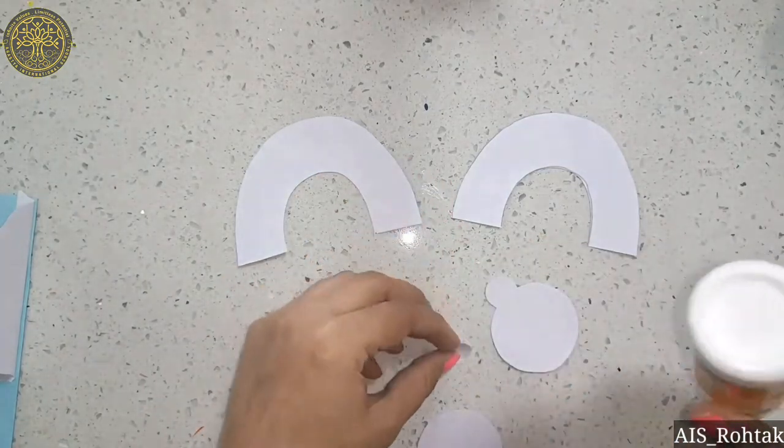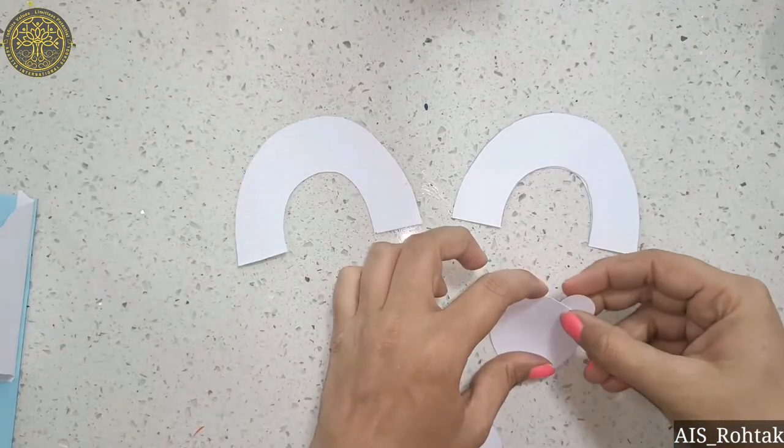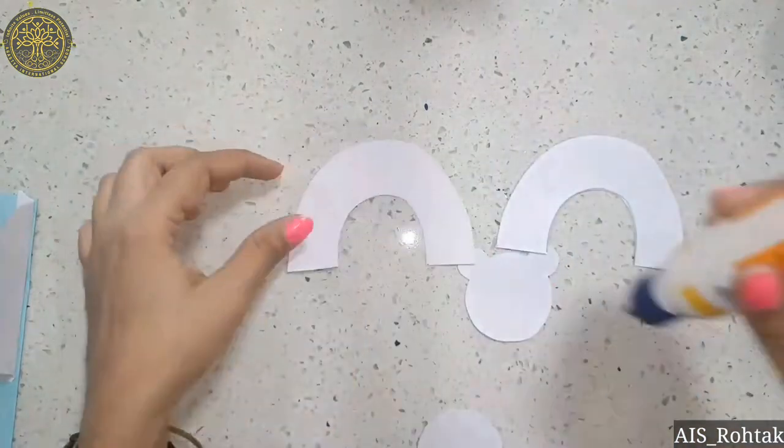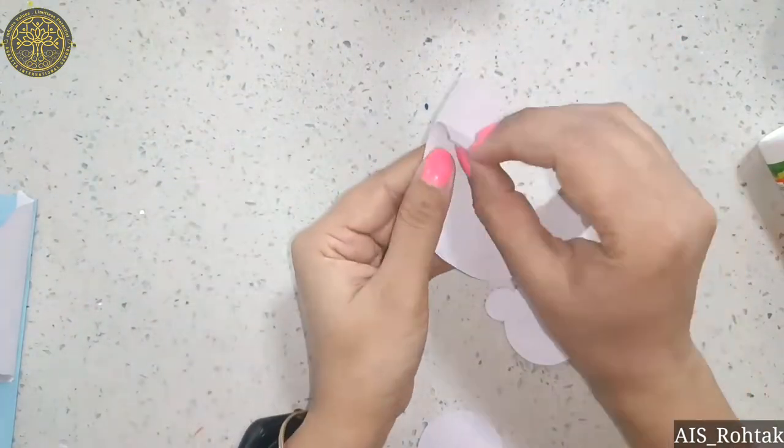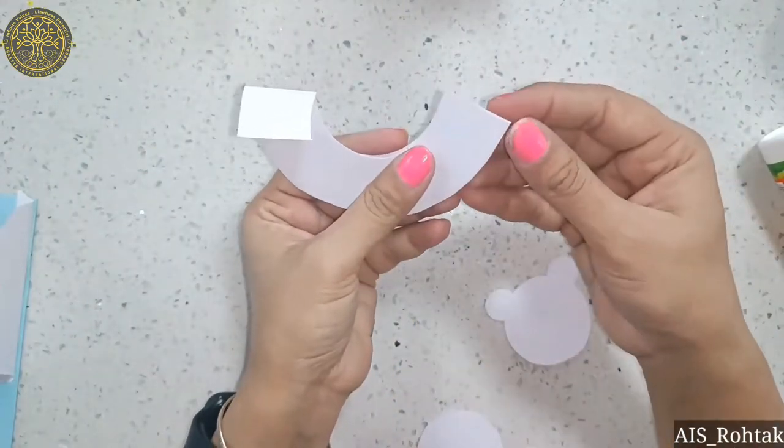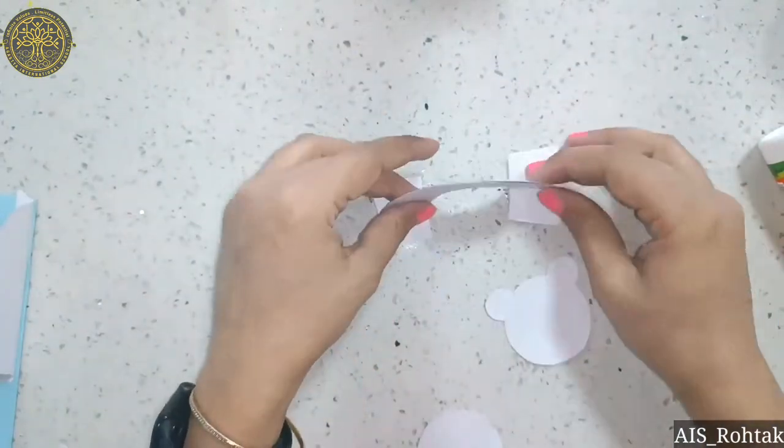Like this, one circle here. One circle is for the tail and one circle is for the mouth. Now paste these curve lines from the upper side only, not the lower portion. We have to fold this lower portion like this.